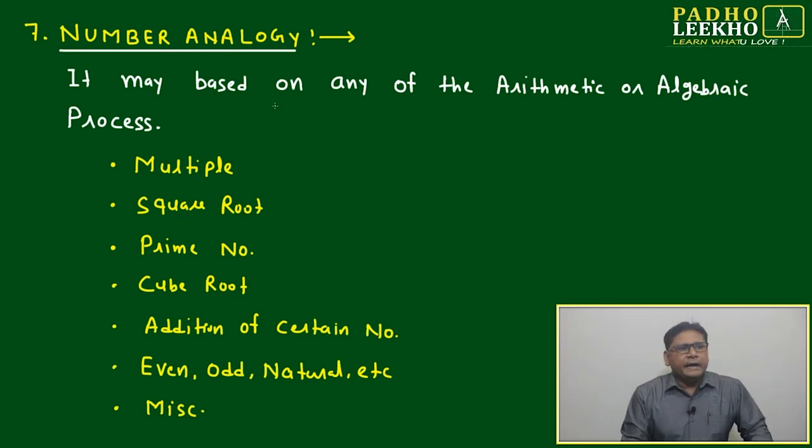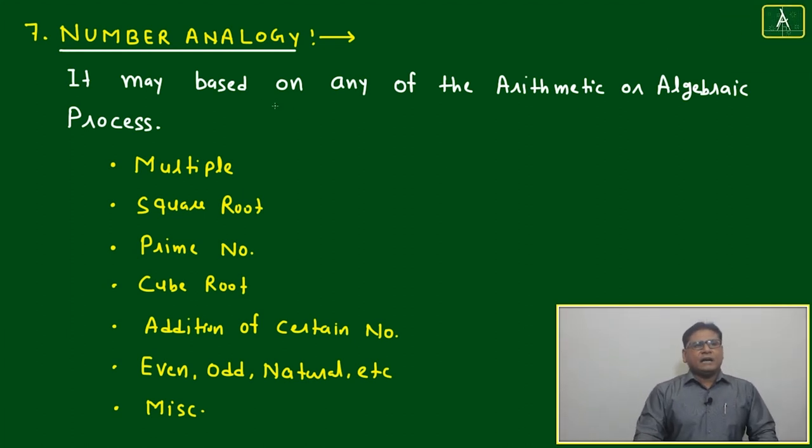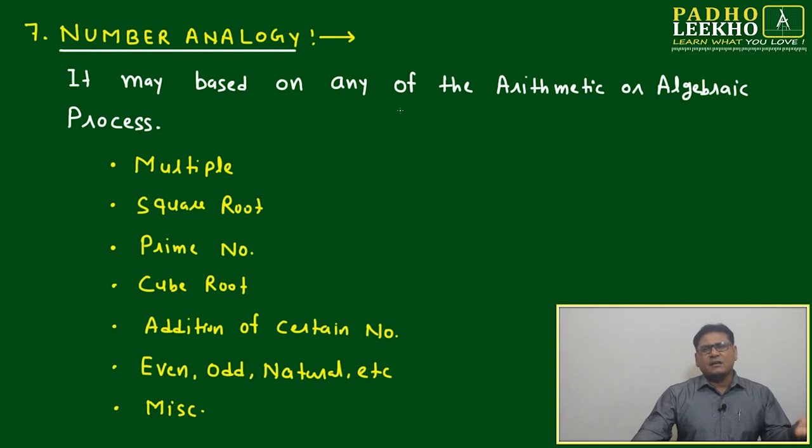Number analogy will be two types. First we'll discuss number analogy, then we'll discuss letter analogy. Number analogy may be based on any of the arithmetic or algebraic processes - maybe multiplication, addition, subtraction, or any of the relations.